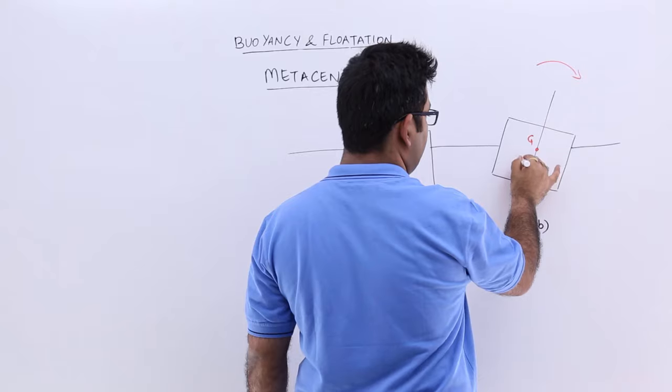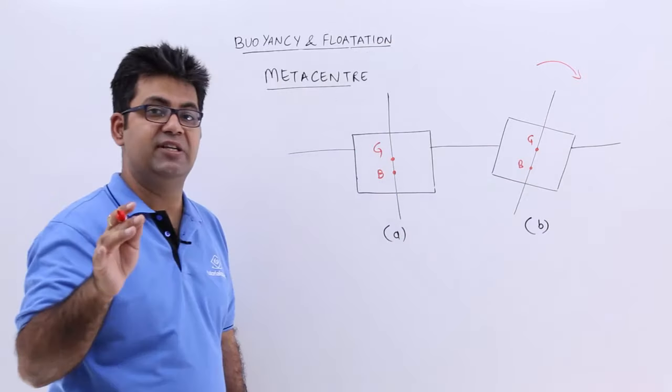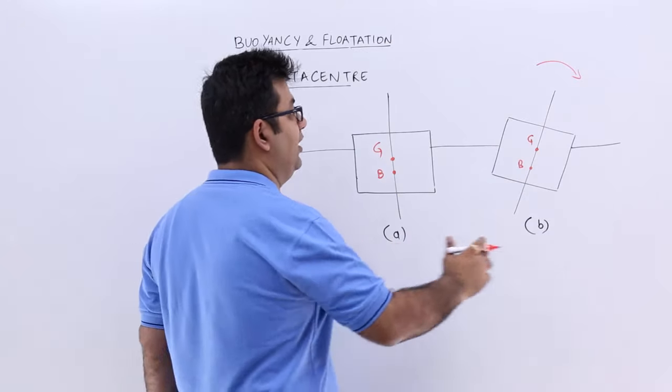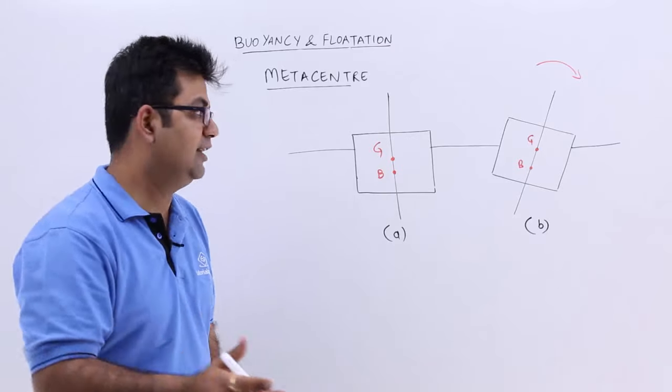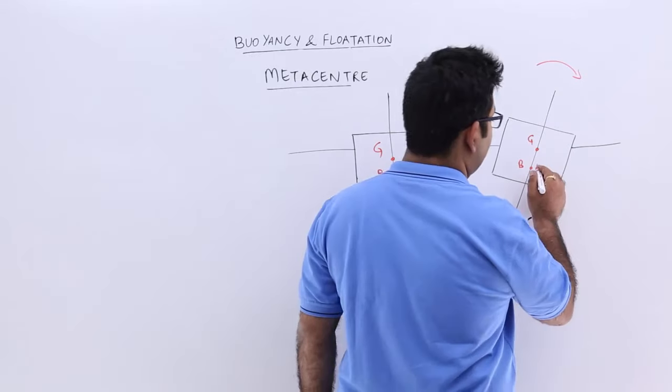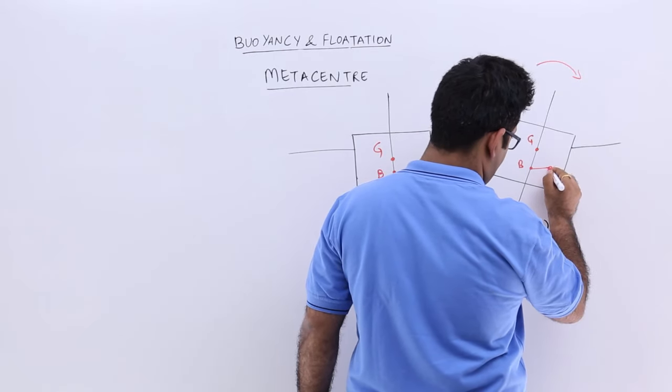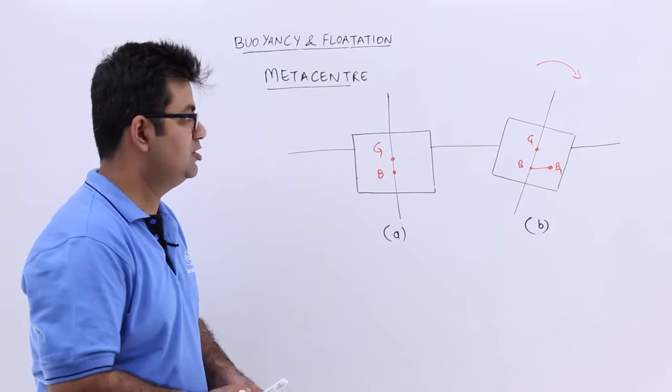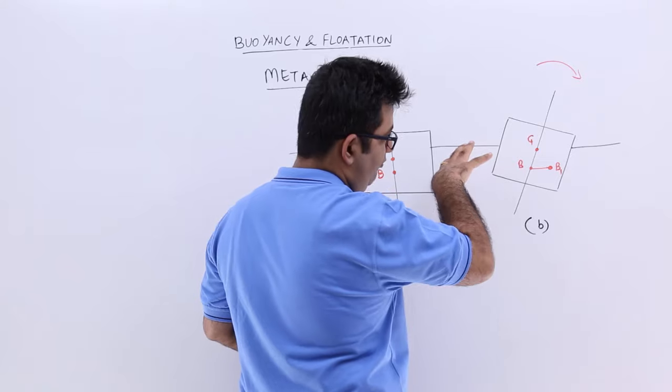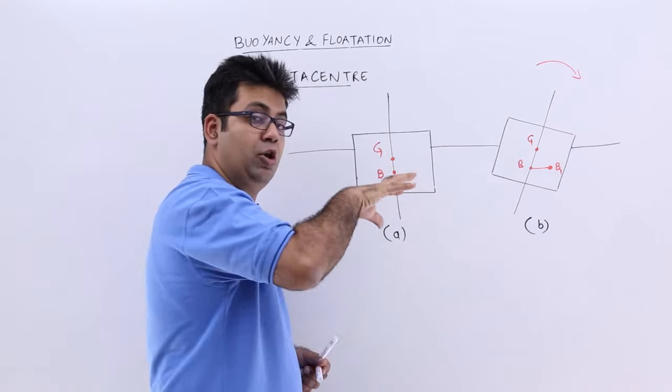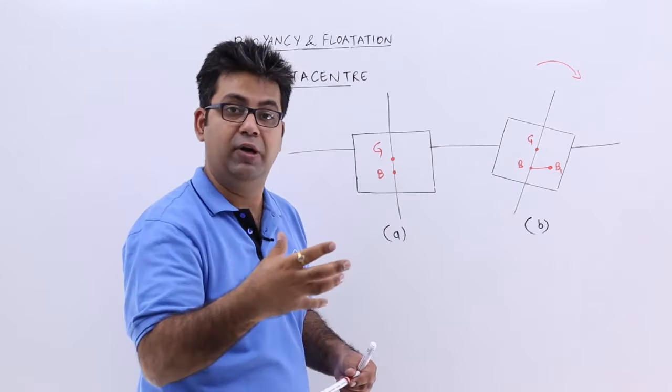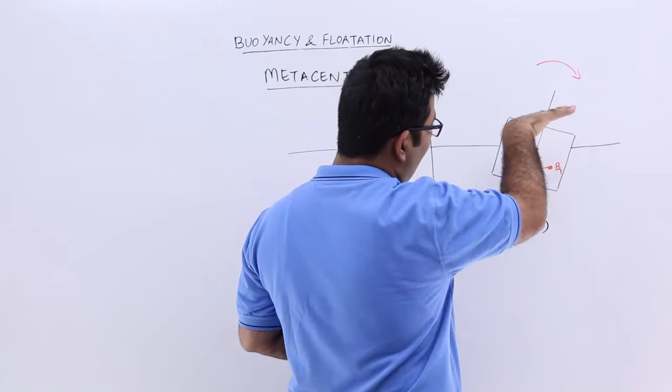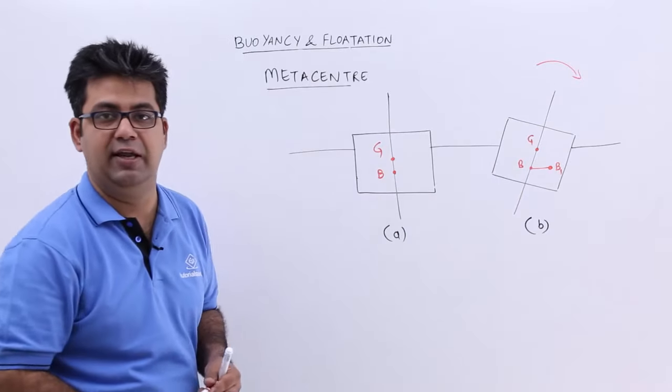You have your B also over here but right now what is happening is your B is shifting. Your B will shift from B to B1 because the majority of the volume of the body or bulk of the body has now shifted or tilted towards the clockwise direction.